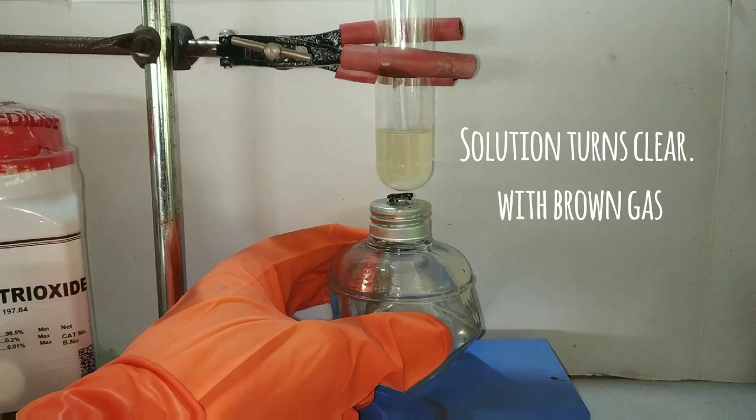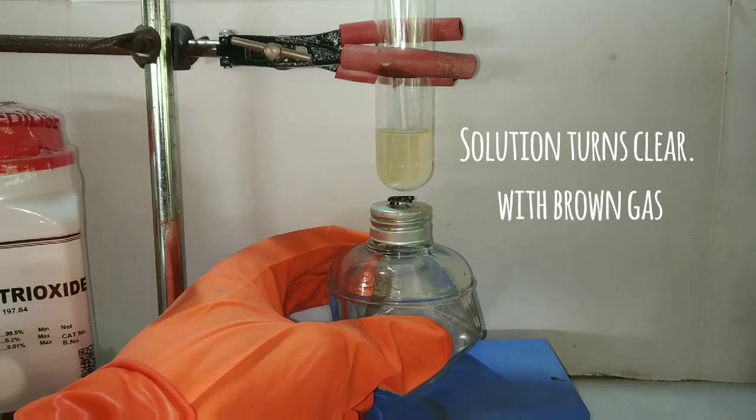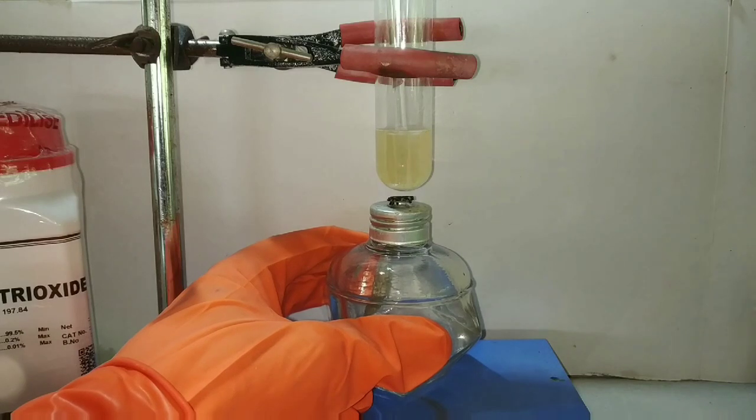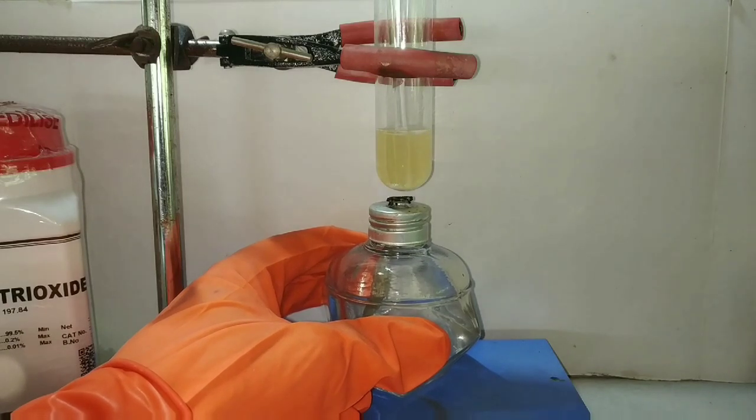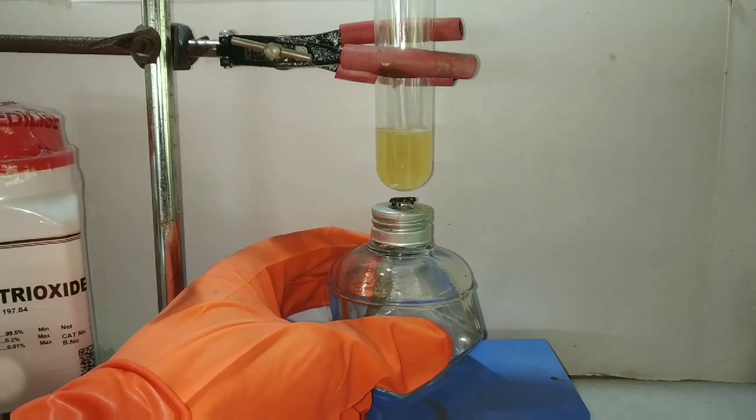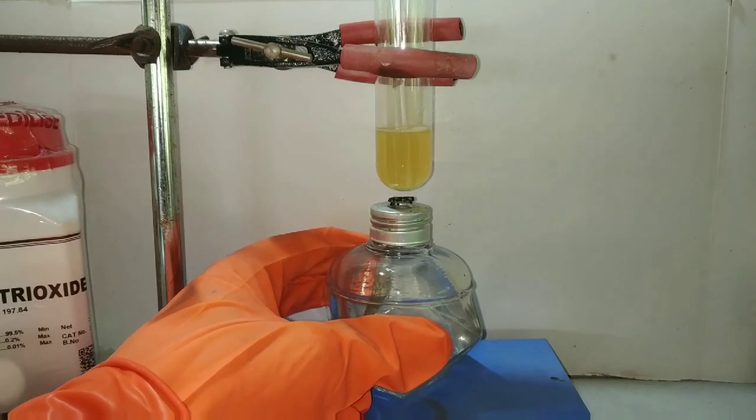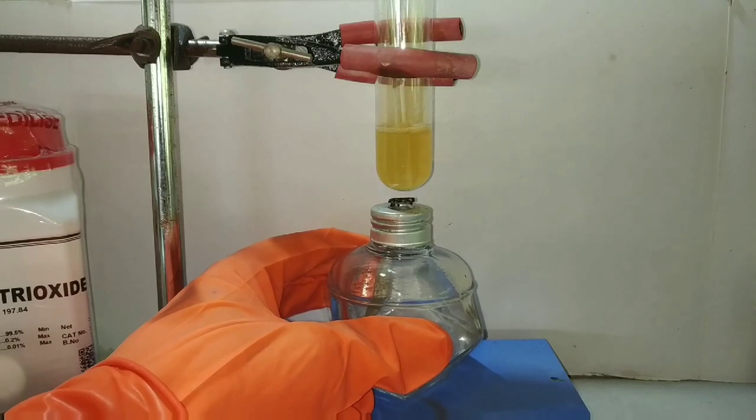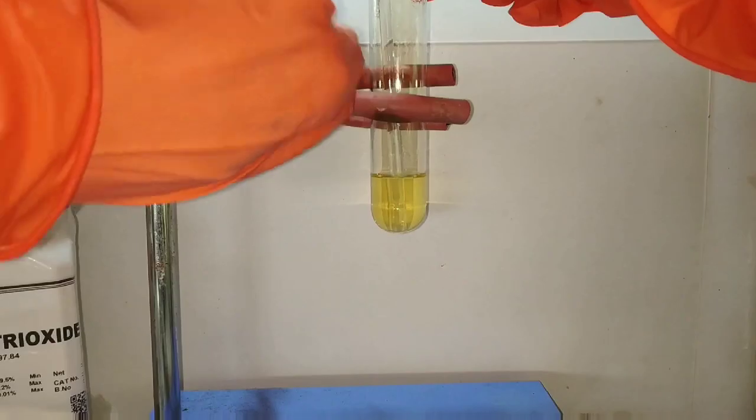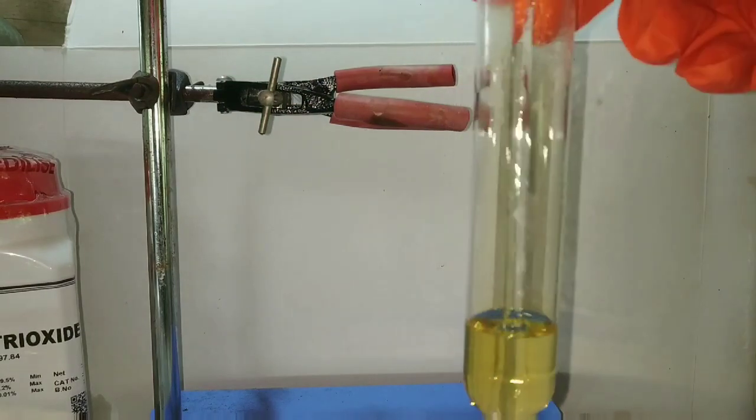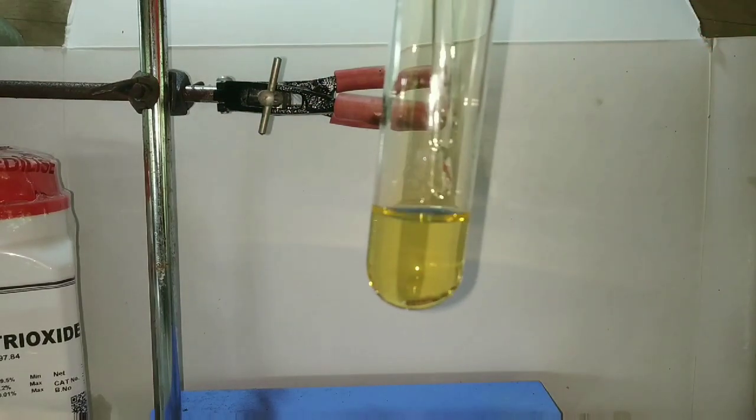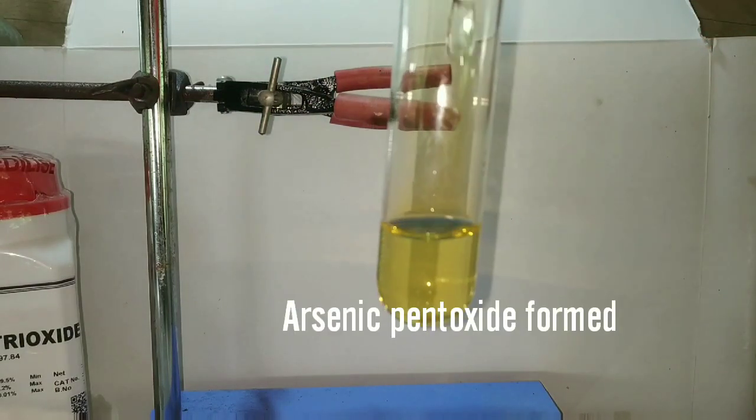You can see that on heating and mixing the contents, the solution has turned clear and there is evolution of a brown gas and the solution is turning brown, which indicates that the oxidation has taken place. The compound has been converted to arsenic pentoxide and nitric acid is reduced and nitrogen dioxide gas is being formed.